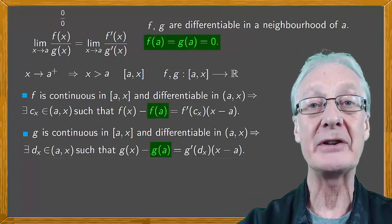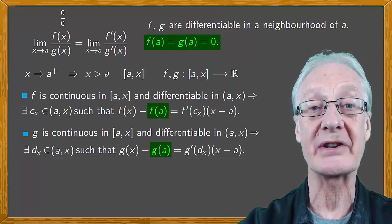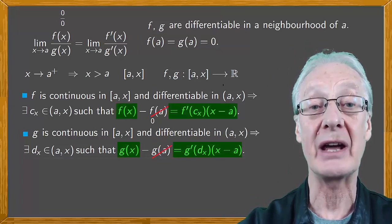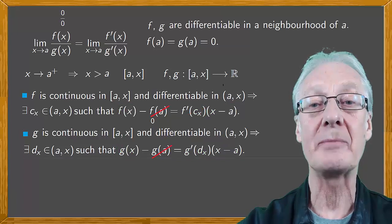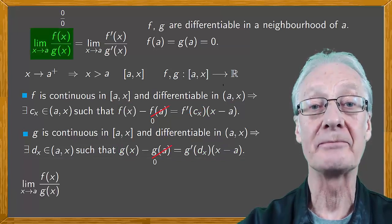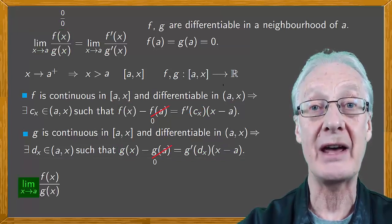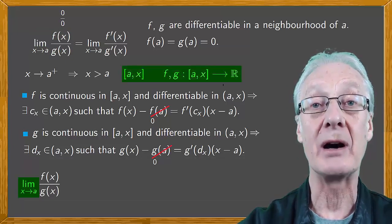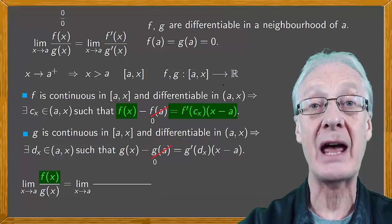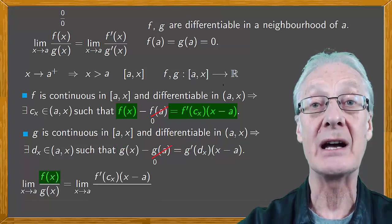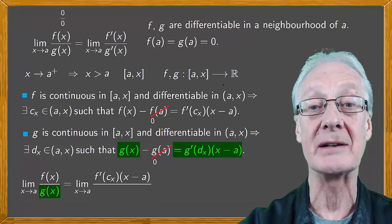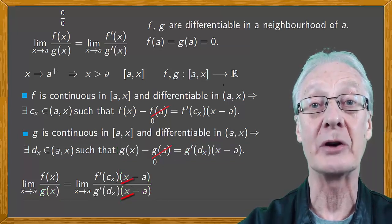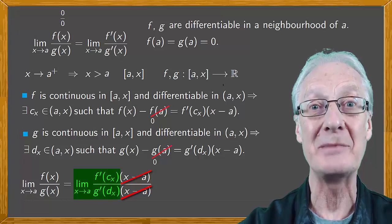Remember that f(a) and g(a) are zero and we have two expressions for f(x) and g(x). Now let's go back to the limit that we want. The limit as x tends to a. When x is very close to a we can apply the formula above. We substitute for f(x) in the numerator and g(x) in the denominator and then cancel the factor (x minus a) on the top and bottom and we have our limit.